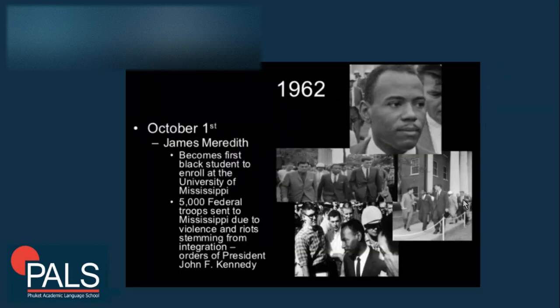In 1962, on October 1st, James Meredith became the first black student to enroll at the University of Mississippi. Five thousand federal troops were sent to Mississippi due to violence and riots stemming from the integration. The troops were deployed by orders of President John F. Kennedy.